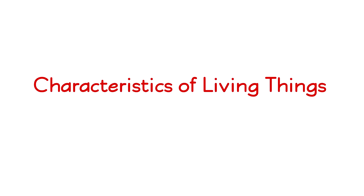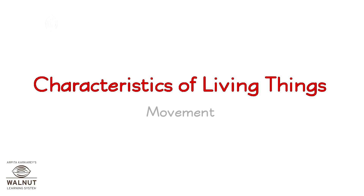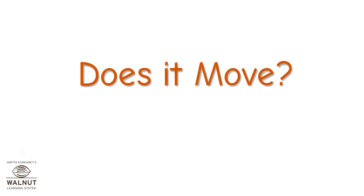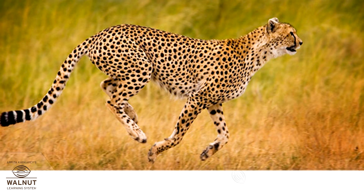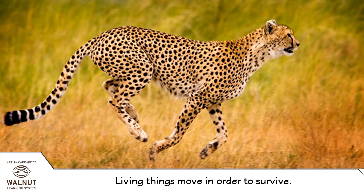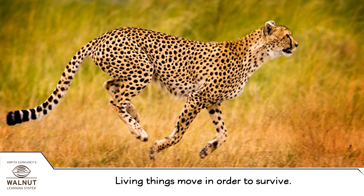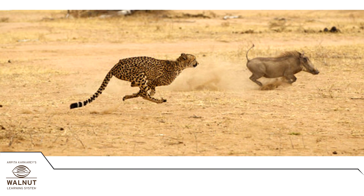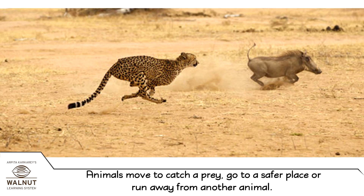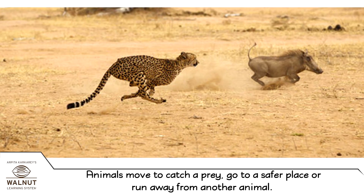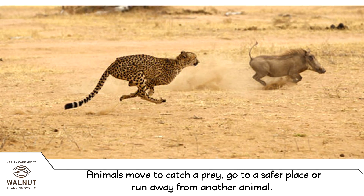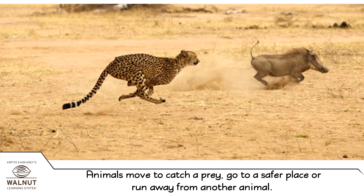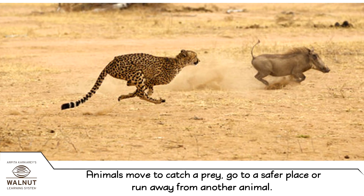Characteristics of living things: movement. Does it move? Living things move in order to survive. Animals move to catch prey, go to a safer place, or run away from another animal.